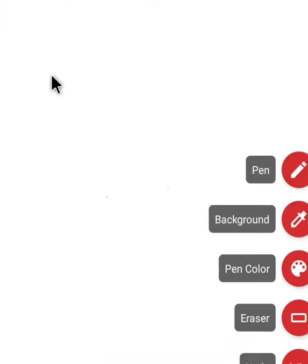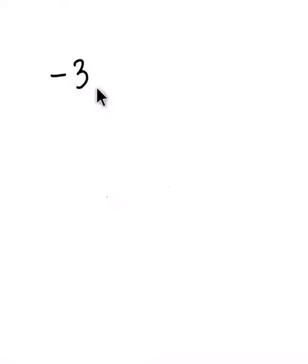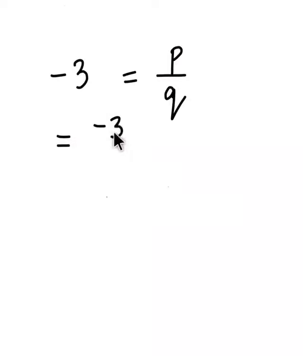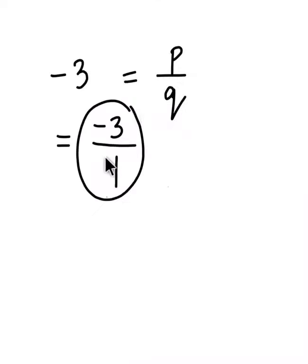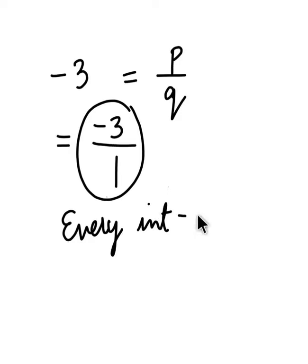Now, if you take any integer like minus 3, so minus 3 is an integer, but if it has to be represented in rational number format, that is P by Q, then minus 3 can be written as minus 3 in the numerator by 1 in the denominator. So minus 3 by 1 is in P by Q format, which is a rational number. So an integer can also be represented as a rational number, and we can say every integer is a rational number.